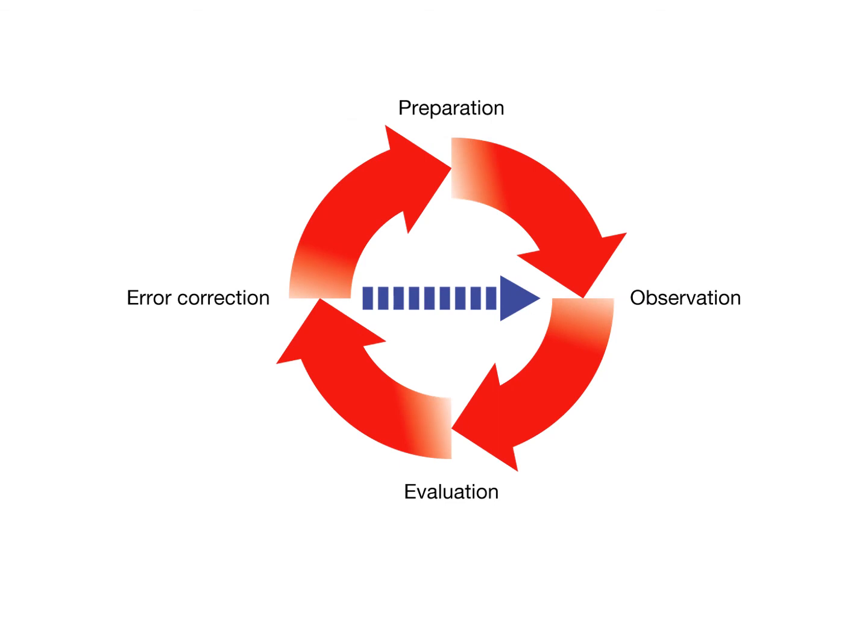Diagrammatically, the QMA process forms a loop: preparation at the top, followed by observation, then evaluation, and then error correction — after which you observe all over again. This is exactly what your coach does for you in sport, and what PE teachers have done across junior and middle school: watching performance and giving feedback to identify strengths, weaknesses, and plot a course of improvement.